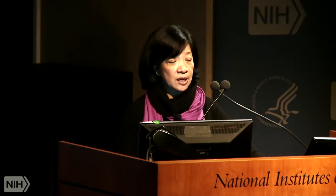What became appreciated is that the role of these proteins is not just limited to infectious diseases — they have a large role in many other functions. These include a role in adaptive immunity, general inflammatory disorders, metabolic diseases — a huge group of diseases we all became much more aware of because of public health hazards — and colitis and colitis-associated colon cancer. Other groups have also found roles in macular degeneration, neurological diseases, ischemic reperfusion, and many others.